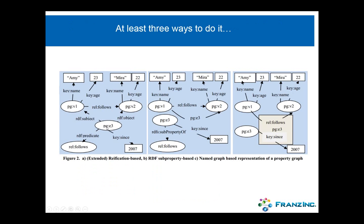The first way would be to use the traditional W3C standard for reification, where you have a statement with a subject, predicate, and object, and then multiple meta-statements about the combination of subject-predicate-object. The second way: for every link where you want to put metadata, you make a subproperty with a new name that has all kinds of additional properties. The third way — and I think the industry is going more in that direction — is to use the fourth element of a triple as a handle for your property graphs.